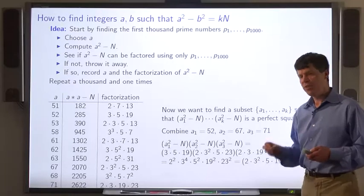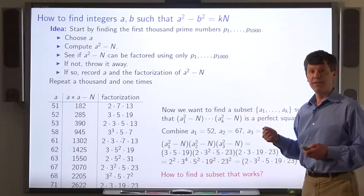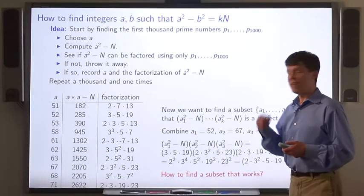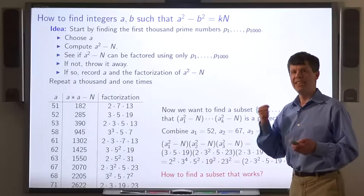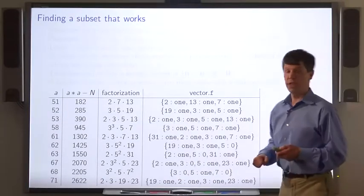How do we find a subset of those a's that will work in this way? A subset of a's such that the corresponding product of a squared minus n is a perfect square? We're going to use linear algebra.